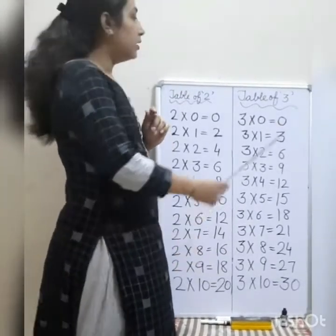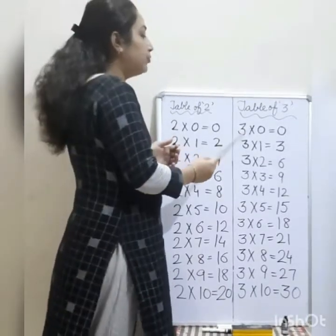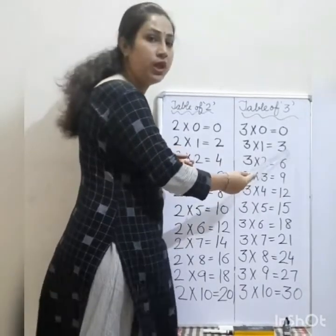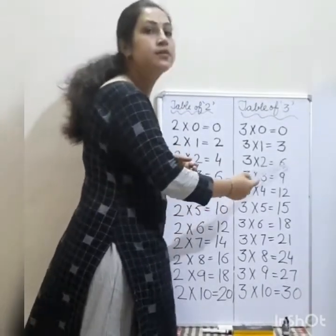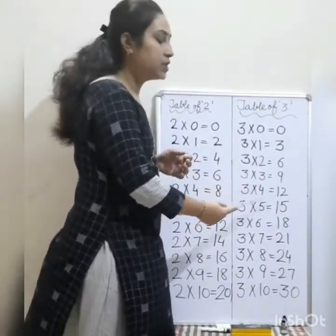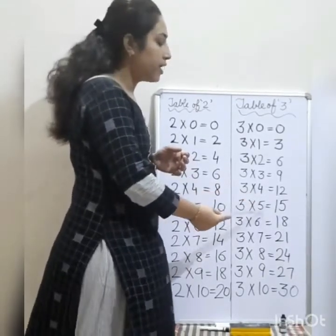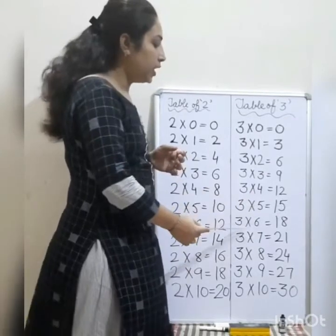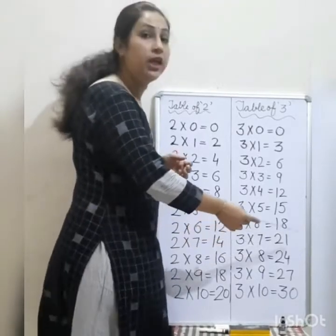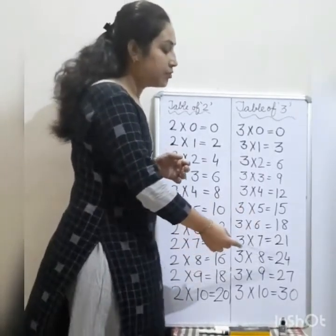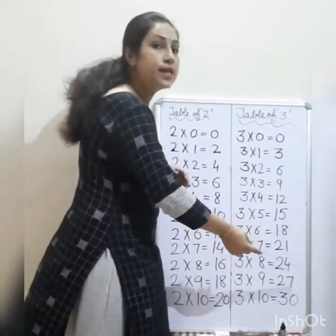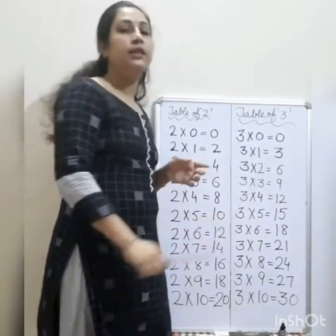Okay. Table of 3: 3 0's are 0, 3 1's are 3, 3 2's are 6, 3 3's are 9, 3 4's are 12, 3 5's are 15, 3 6's are 18, 3 7's are 21, 3 8's are 24, 3 9's are 27, and 3 10's are 30.